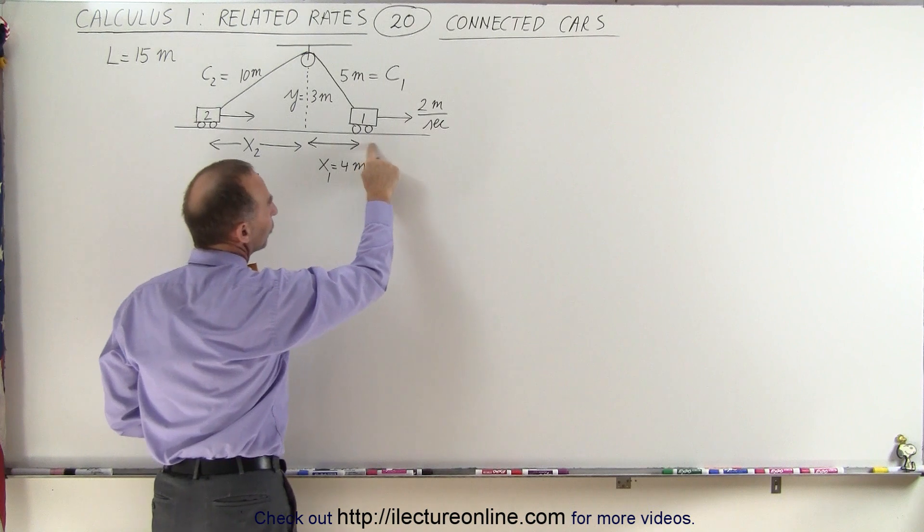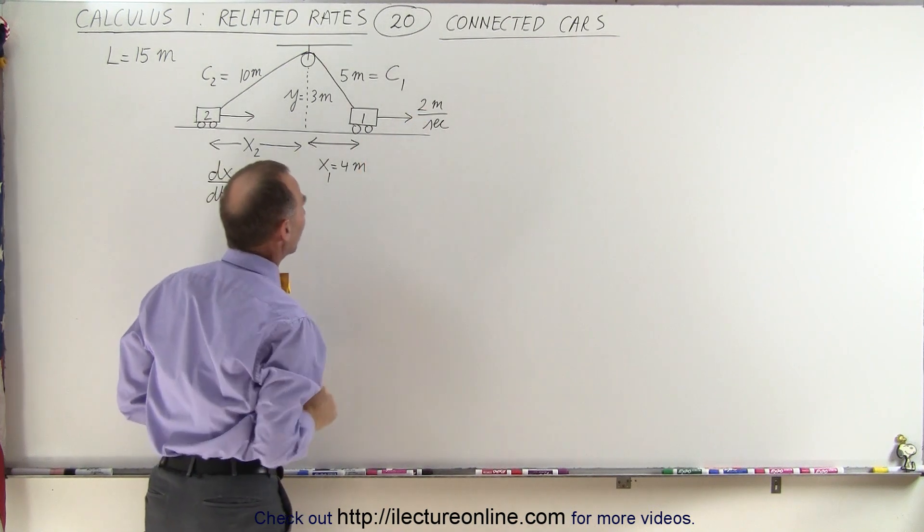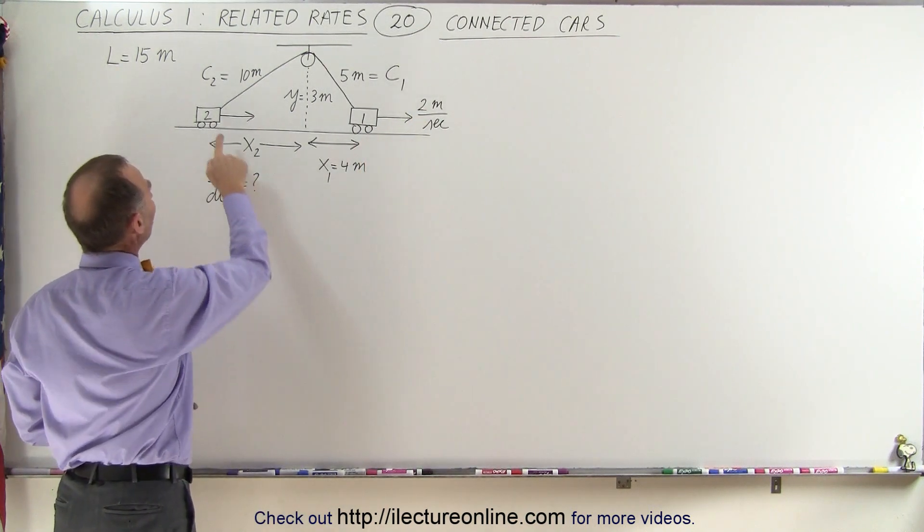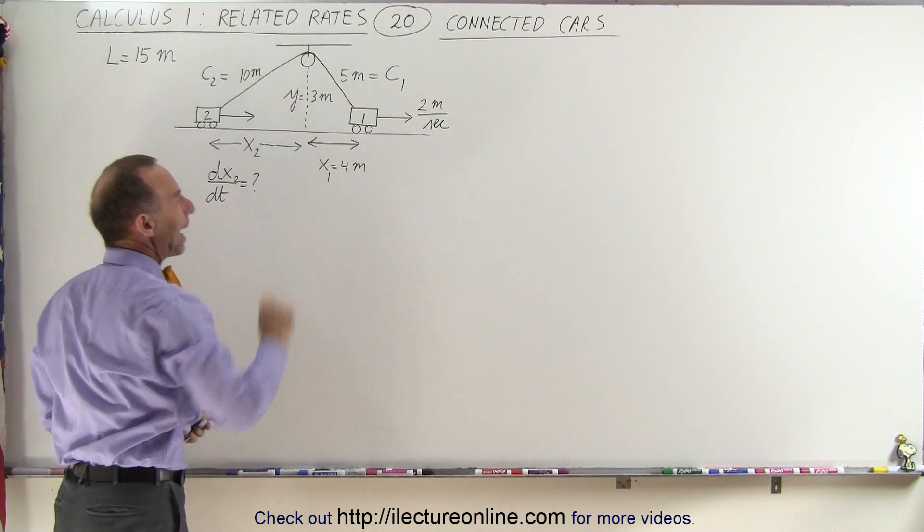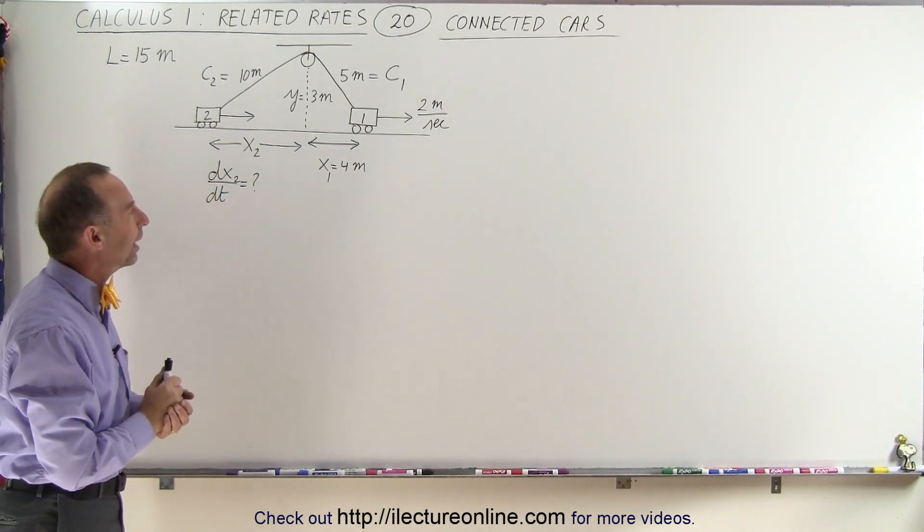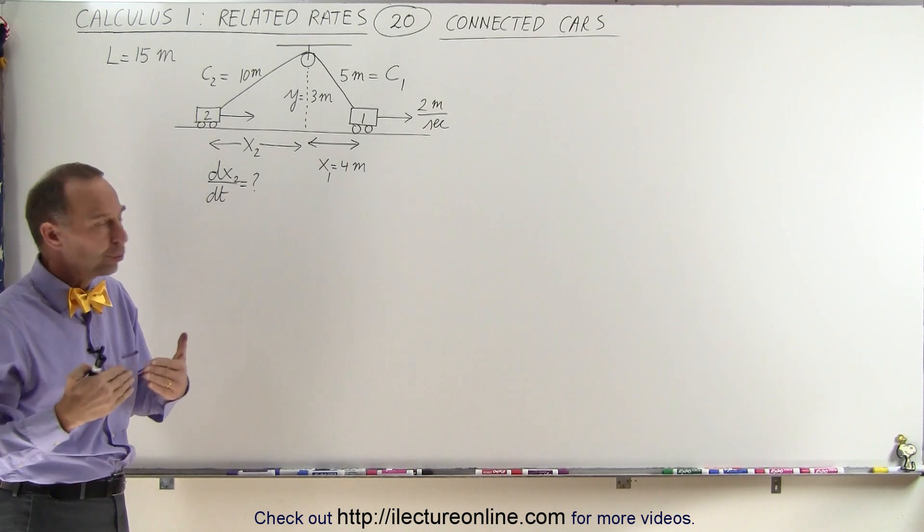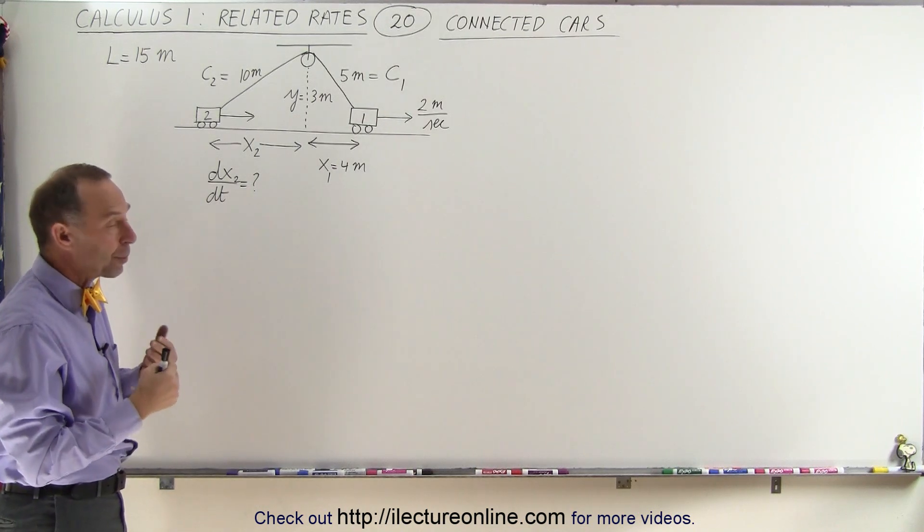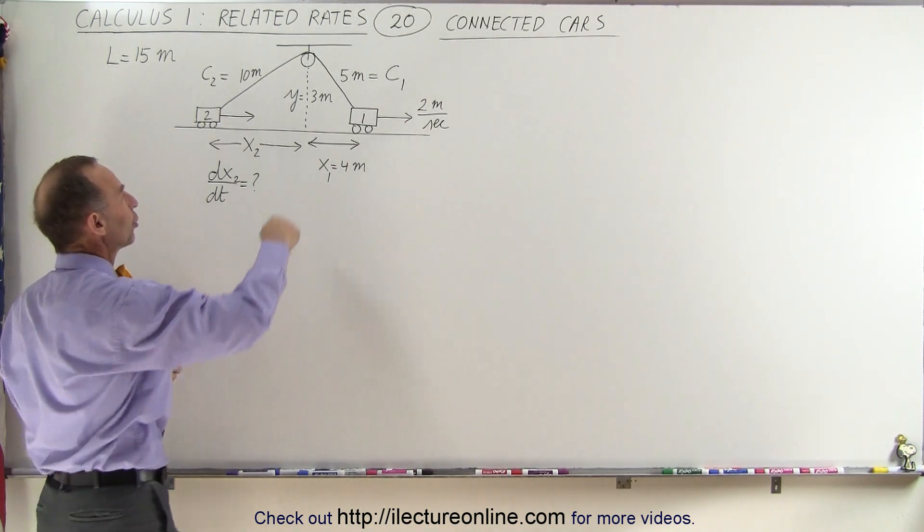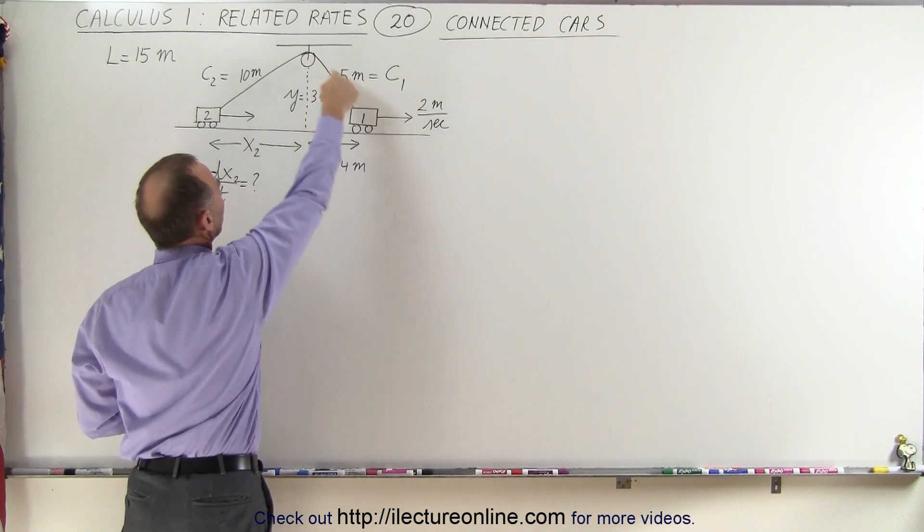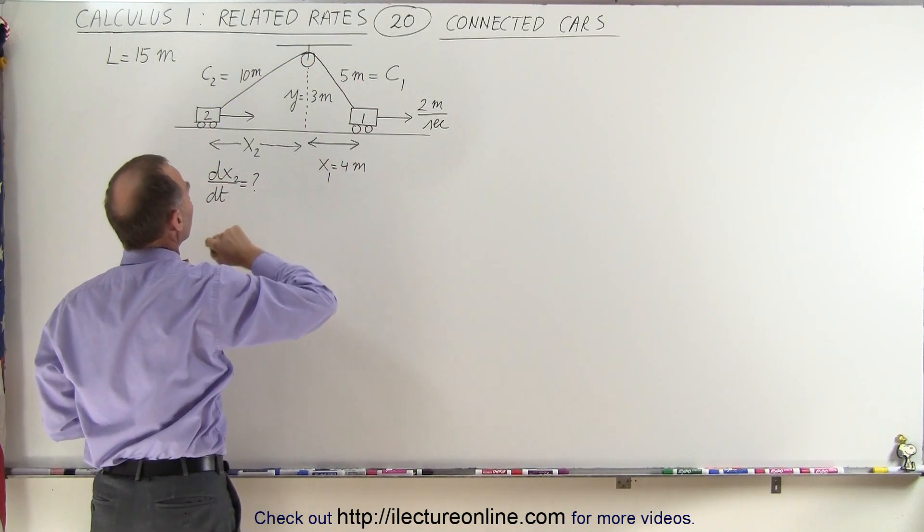The first car is moving to the right at this moment at two meters per second. We want to know how fast this car is moving at the same time. How do we do that? Well we do have two triangles so probably we'll need two equations.